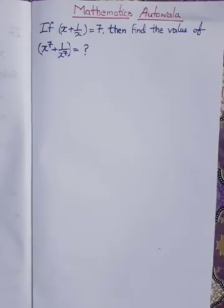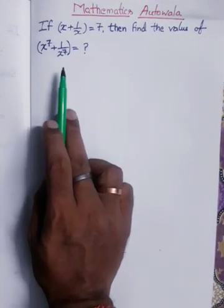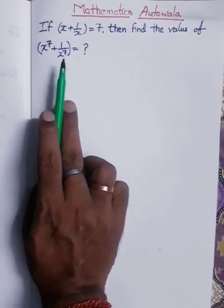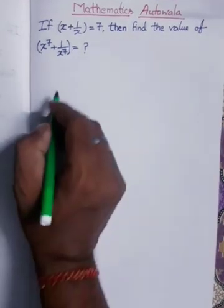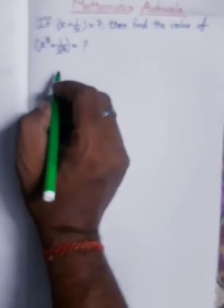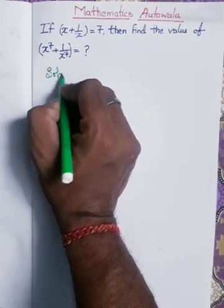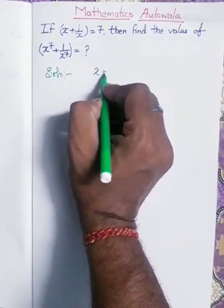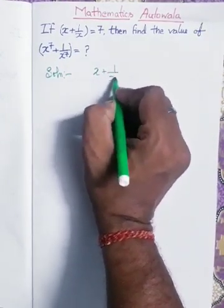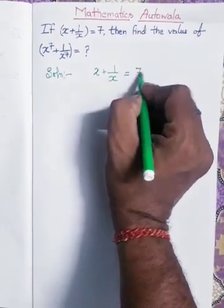Hello viewers. If x plus 1 by x is equal to 7, then find the value of x to the power 7 plus 1 by x to the power 7. Solution: x plus 1 by x is already given as equal to 7.